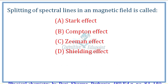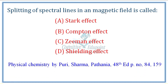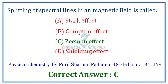Next question: Splitting of lines in a magnetic field. Spectral lines can be split by magnetic or electric fields. In a magnetic field, this is called the Zeeman effect. In an electric field, it is called the Stark effect. The Compton effect relates to wavelength shift; the shielding effect relates to electrons. Splitting of spectral lines in a magnetic field is called the Zeeman effect. Correct answer C.